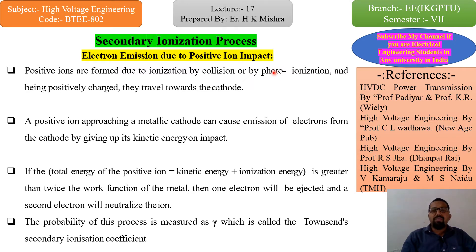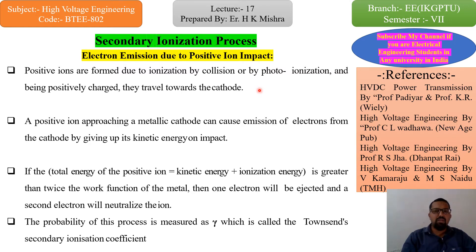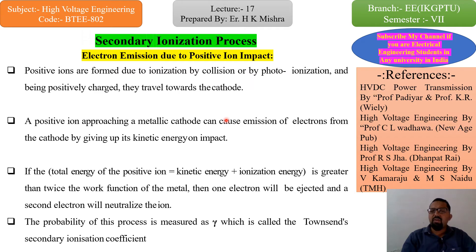Before that, we already studied the primary ionization process, which happens due to electron collision and by photo ionization. These are the electrons we study in primary ionization. In this topic, we will study the electrons generated after primary ionization — the electrons that are generated due to secondary ionization after primary ionization.